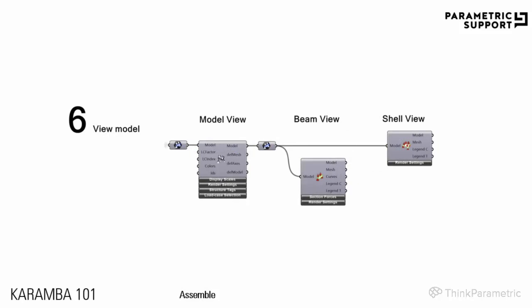Once you assemble and calculate the model, you can see the results using three components: Model View, Beam View, and Shell View. Model View sets basic visualization properties like symbol sizing and deflection scale. Beam View shows specific beam results such as utilization or cross-section. Shell View works similarly, and you can define what kind of projection you want by selecting options in the submenus. We are going to apply this now on a live example of a static beam. See you in the next lesson.